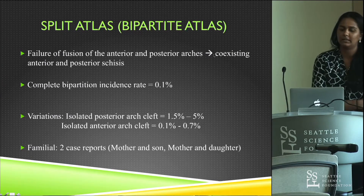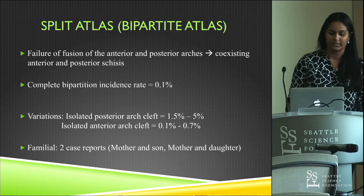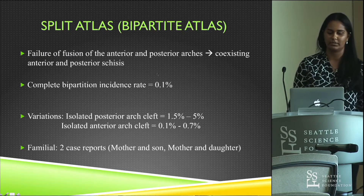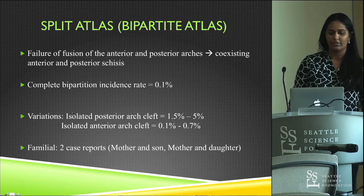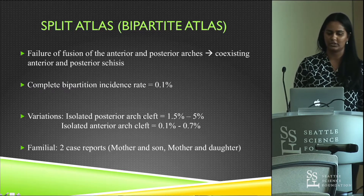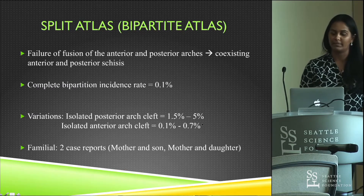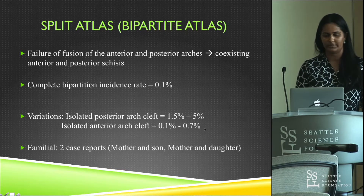Now let's get into the split atlas, also called bipartite atlas. It is a rare congenital abnormality where there is no fusion of both the anterior and posterior arches, giving you a cleft in both — called complete bipartition — occurring in about 0.1% of the population. More commonly there are variations with just an isolated arch cleft: posterior arch clefts occur in up to 5% of patients, whereas anterior arch clefts occur in 0.1 to 0.7% of patients.